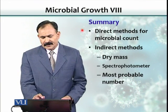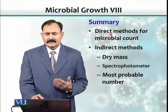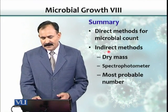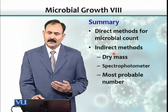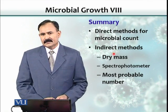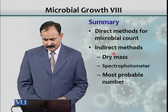In summary, there are direct methods of enumerating cells and indirect methods of estimating how many organisms are present in a sample.